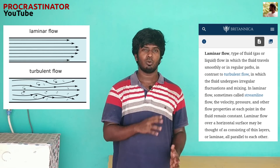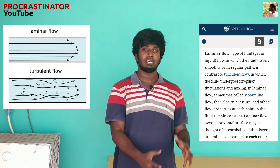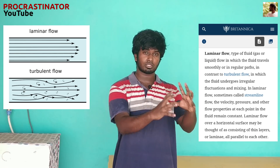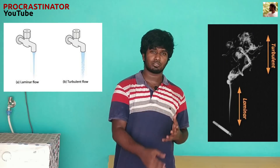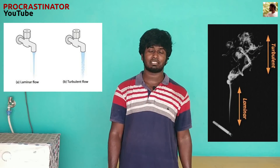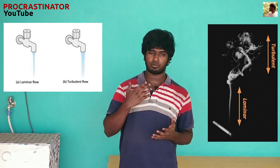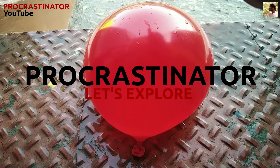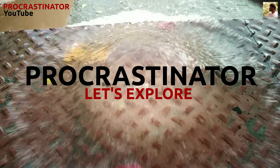Laminar flow — the basic thing is, a liquid or gas will flow in a smooth, orderly manner. This is called laminar flow. If the flow becomes chaotic, it transitions to turbulent flow. Let's start the video.